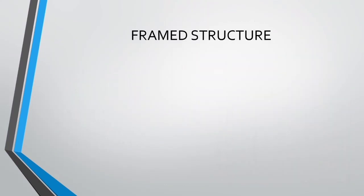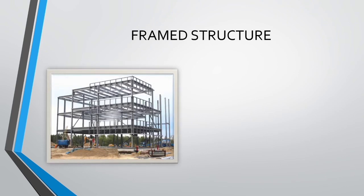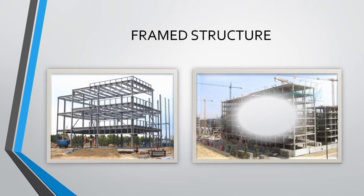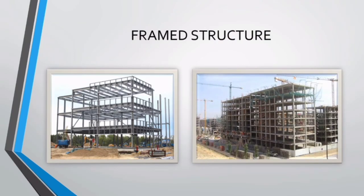Then we have frame structure. In multi-storied buildings, a frame structure is provided in which the interconnected framework of slabs, beams, columns, and footings transfers the loads to the underground soil through the foundation. Different types of foundation — like isolated column footing, raft foundation, or pile foundation — are provided depending upon the building.